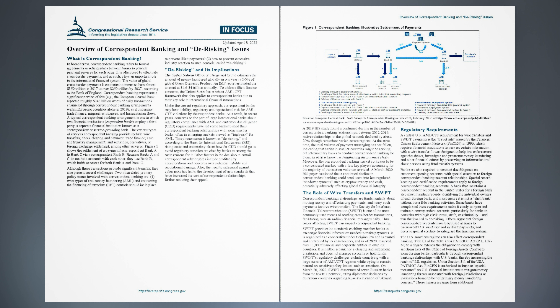Other factors in the decision to curtail Correspondent Relationships include profitability considerations and concerns over potential liability and reputational damage. Also, the need to safeguard against cyber risks has led to new standards that have increased the cost of Correspondent Relationships, further reducing their appeal. A 2019 BIS study found a continued decline in the number of Correspondent Banking Relationships between 2012 and 2019 — active relationships in the global network declined by about 20%, though reductions varied across regions. At the same time, the total volume of payment messaging has not fallen, indicating that banks in smaller countries might be seeking out intermediary banks to conduct Correspondent Banking for them, in what is known as lengthening the payment chain.